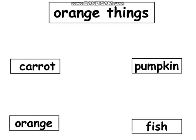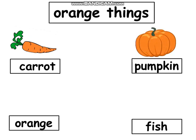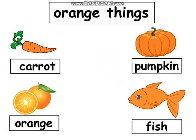In this slide you will see different things of orange color. What is this? Come on, tell me — excellent, carrot! What is this? Come on, give me the answer — wonderful, pumpkin! And what is this? Orange! What is this? Come on, tell me — fish! Now it's your turn, tell me what color are all of these things? Great job, all things are orange in color. Excellent!